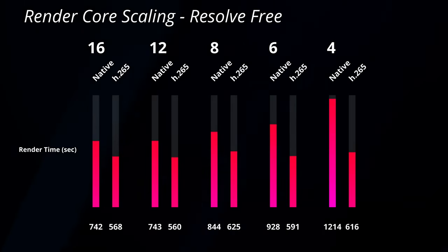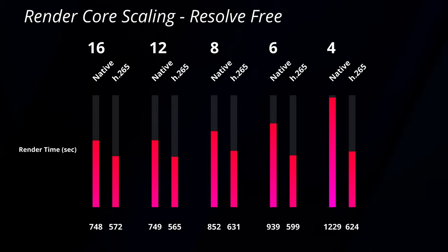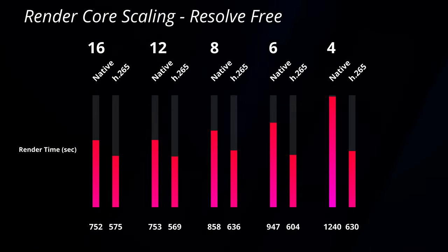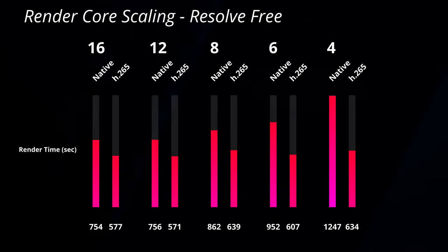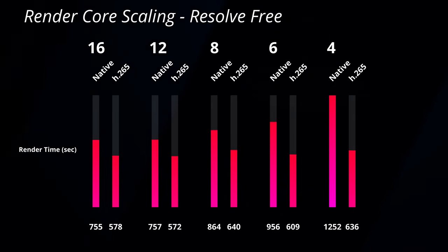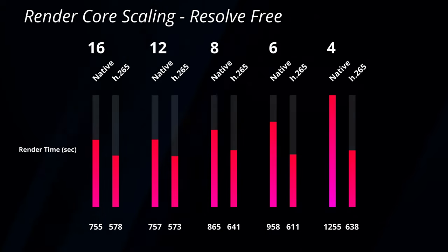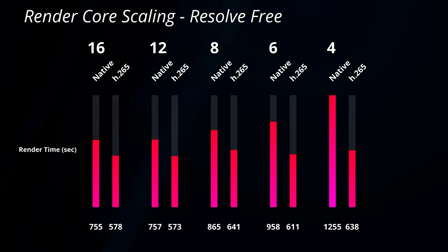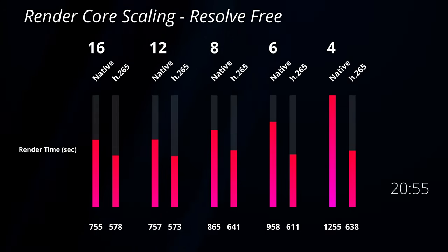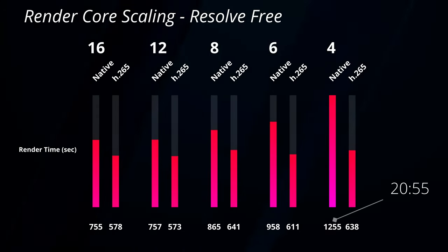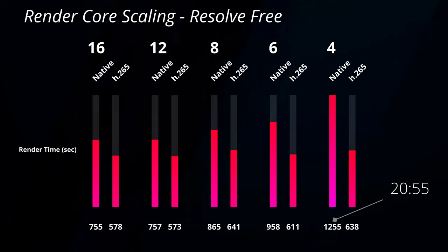That one primarily runs in the CPU, and that's why you see core scaling from 16 to four cores taking longer. In fact, this chart is in seconds, and you can see four cores takes over 20 minutes to execute.